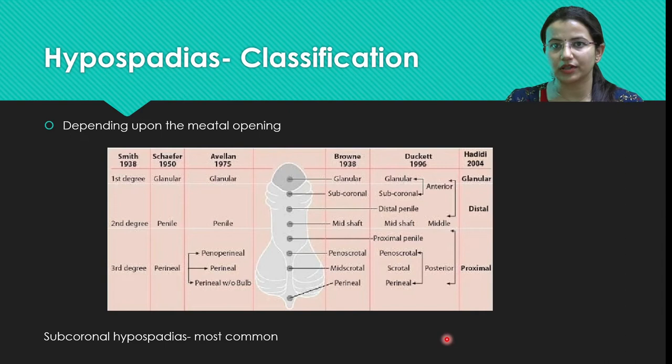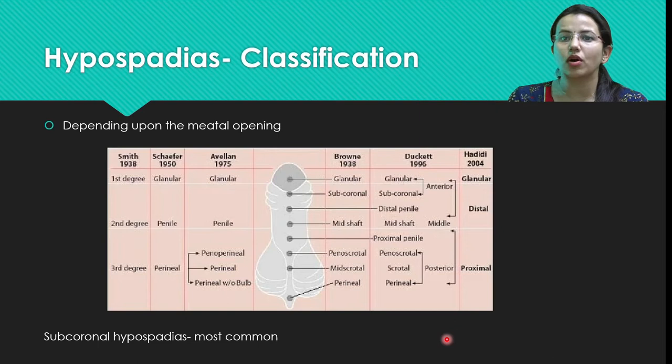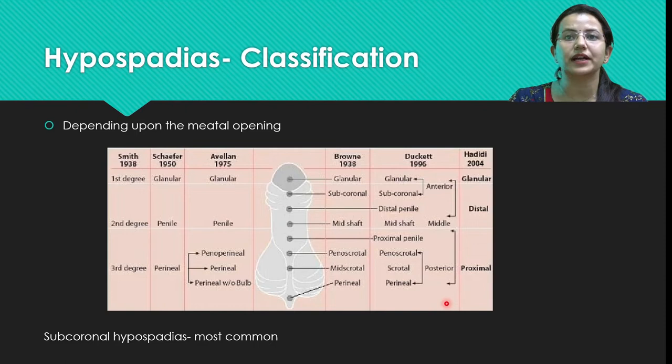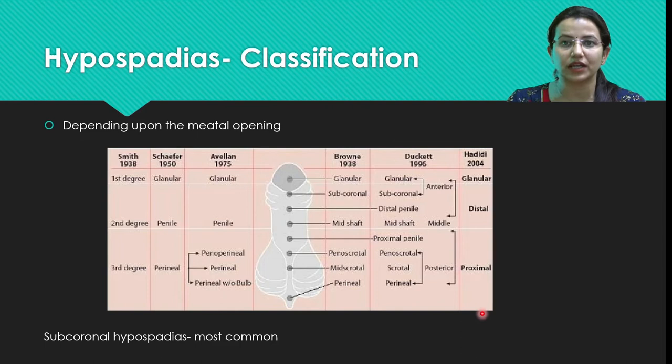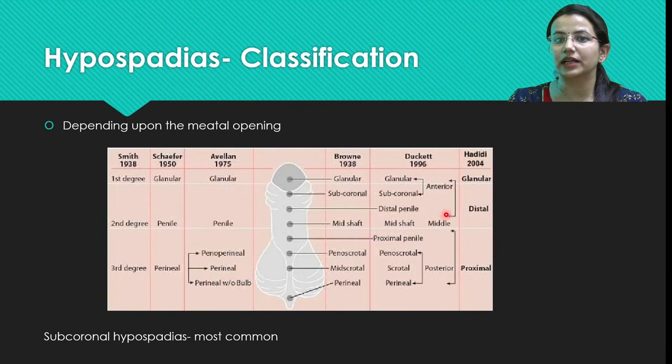How do we classify hypospadias? There have been various classifications but the most common is: anterior hypospadias, posterior hypospadias, glandular, distal, and proximal hypospadias. The distal and proximal classification helps define the treatment plan. Distal hypospadias can be operated in a single stage and tend to have less chordee.